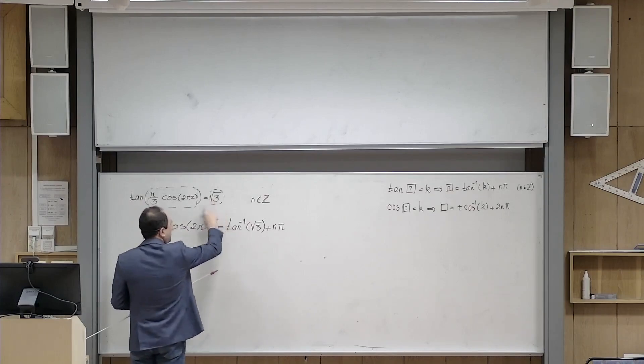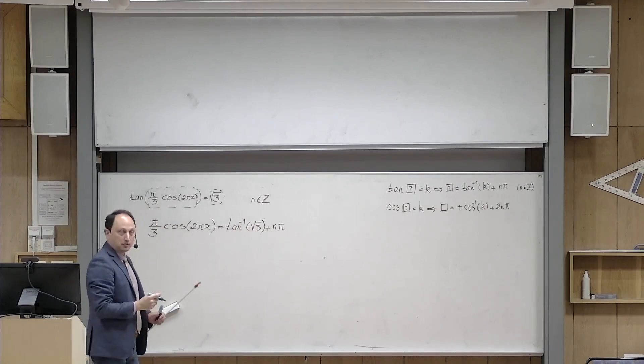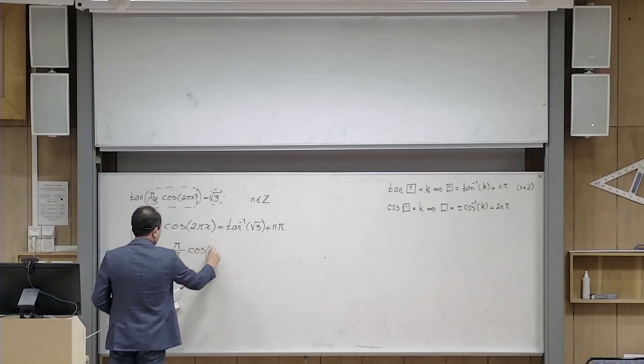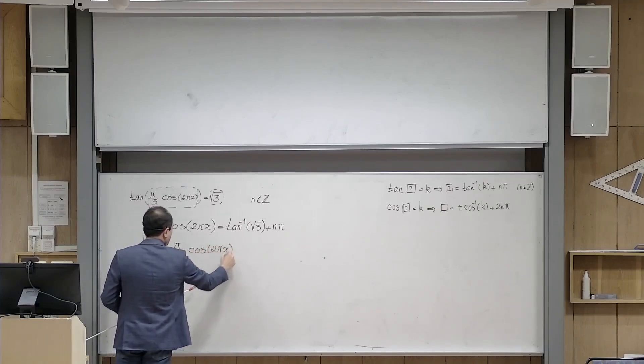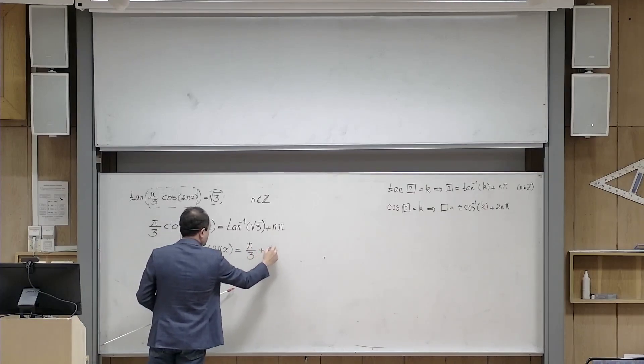But this square root of 3 is a famous number. Tangent inverse of square root of 3 is nothing except pi over 3. So this becomes pi over 3. Pi over 3 times cosine 2 pi x equal to pi over 3 plus n times pi.